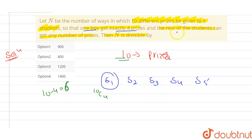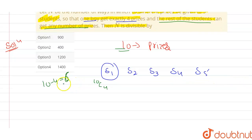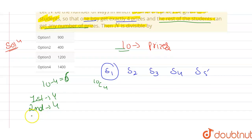Now, the question says the rest of the students can get any number of prizes. Any number of prizes means this boy can get 1 prize, this boy can get 2 prizes, this boy can get 1 prize, and this boy can get 2 prizes — so these 6 prizes would be distributed. There are many cases possible, but for each of these 6 prizes, among the 4 remaining students, 4 cases are possible for each prize, up to the 6th prize.